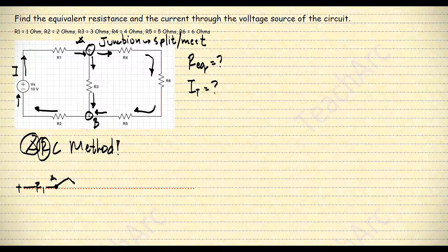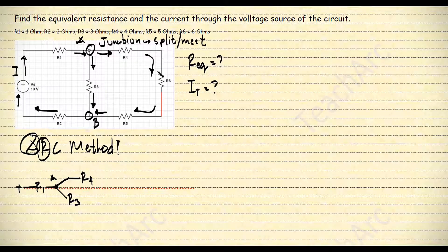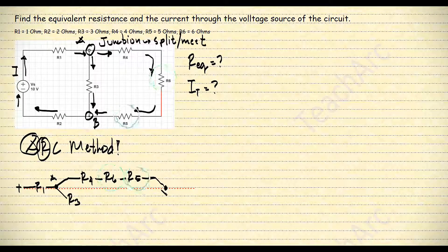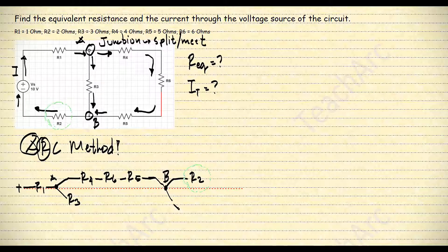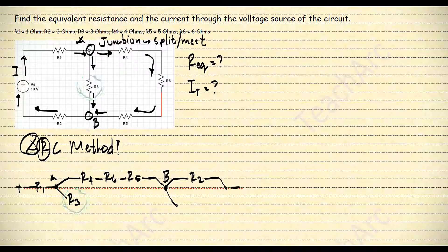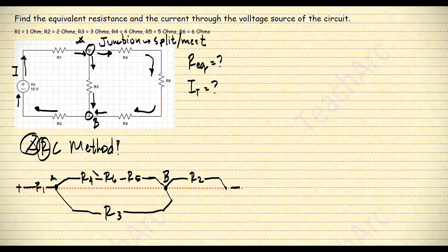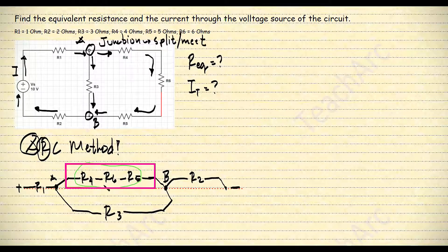At junction A, the current splits into two: the first split runs through R4, and the second split runs through R3. We leave R3 for now and follow the first split. Before reaching junction B, the current runs through R6 and R5. Junction B has two other connections: the first runs through R2 before returning to the negative terminal of the voltage source. The second connection links back to R3. This ends our redrawing step, and the illustration shows that R4, R6, and R5 are connected in series.